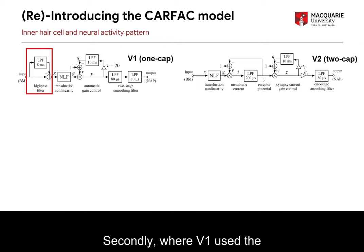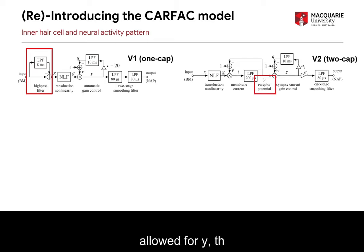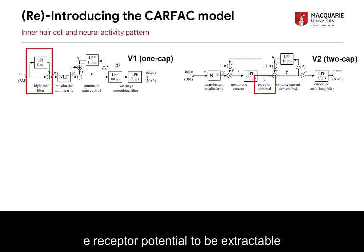Secondly, where v1 used the default one-capacitor state model shown as an automatic gain control, v2 uses a two-capacitor state model. This allows for a wider receptor potential to be extractable from version 2.